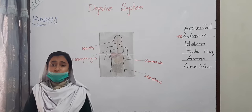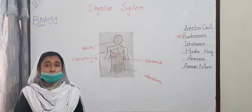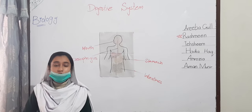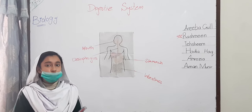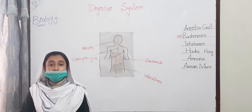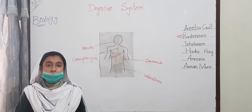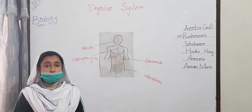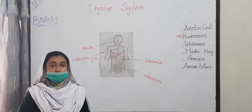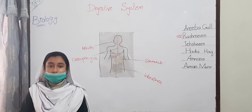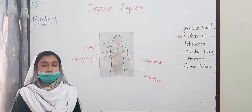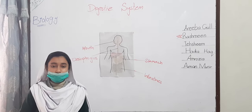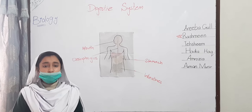The liver provides bile salts to easily absorb fat. The pancreas and intestinal walls secrete juices for food digestion. The inner surface of the small intestine has finger-like structures called villi. The digested food passes into the blood through the villi, and then the blood carries this food to all parts of the body.